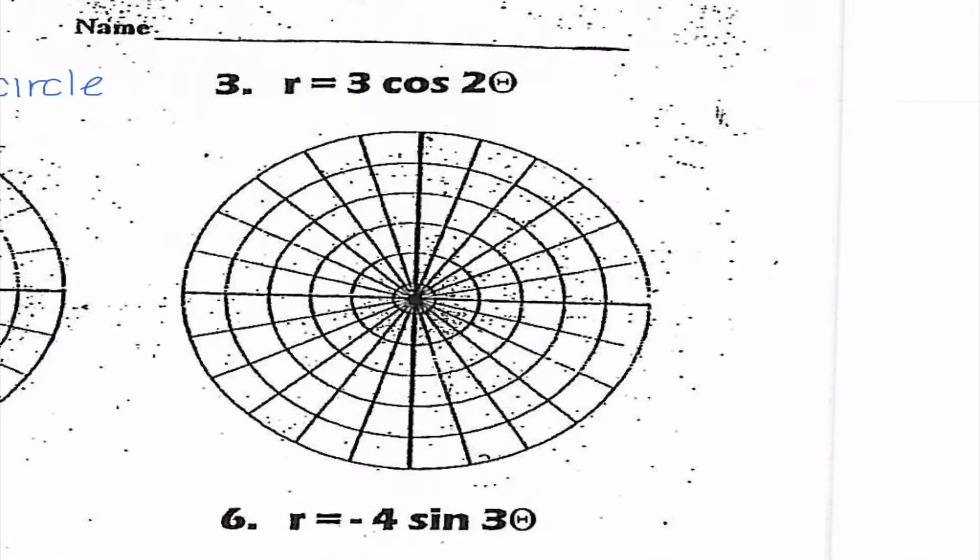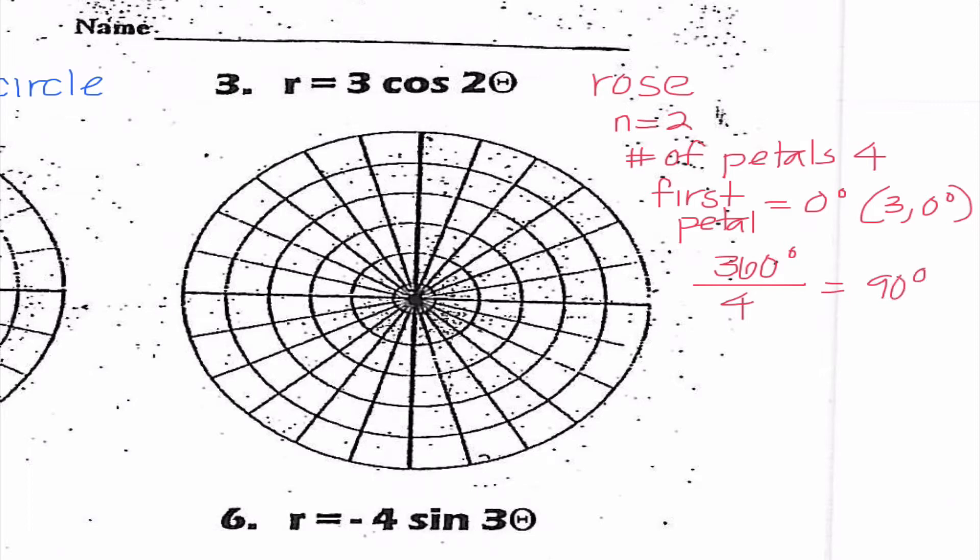Okay, number three, r equals three cosine two theta. This time this is a rose because we have an n value that is something other than one. So things we need to figure out. First of all, since n is two, that means that our number of petals is going to be four because we said whenever we have an even number, we have to double it. Our first petal, since it is cosine, is going to be at zero degrees. And in fact, it's going to be at three, zero degrees because this value here is three. Now, the way that we're going to find the distance between the petals or the angle between the petals is 360 divided by our number of petals, so it's going to be 90 degrees apart. So I'm going out to the right three, and then I'm going to continue moving 90 degrees. And there we go.